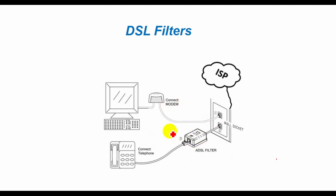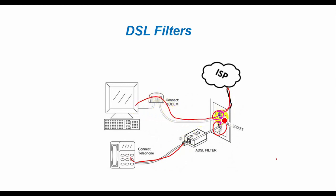DSL uses regular phone lines to transfer data over the same copper wire. The data and voice signals travel over different frequencies, but sometimes the signals interfere with each other. This is why you use DSL filters. A DSL filter works by minimizing this interference, making for a faster and cleaner DSL connection.